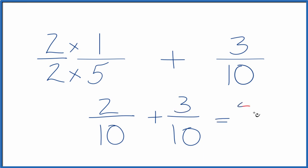So two plus three is five, and then we're adding fractions. Since the denominators are the same, we just bring those across five-tenths.